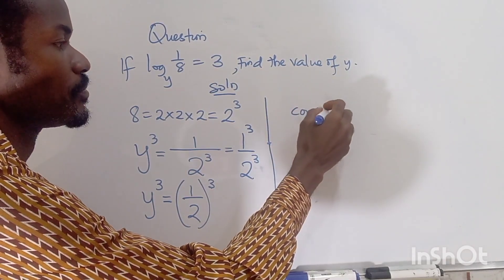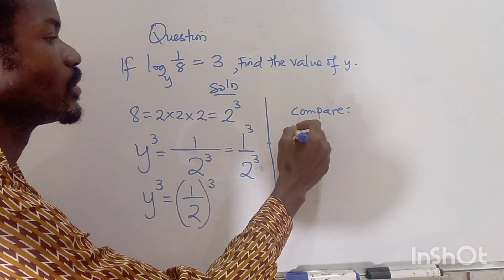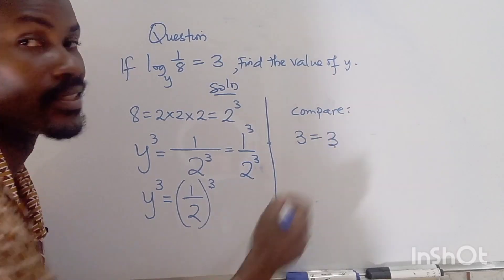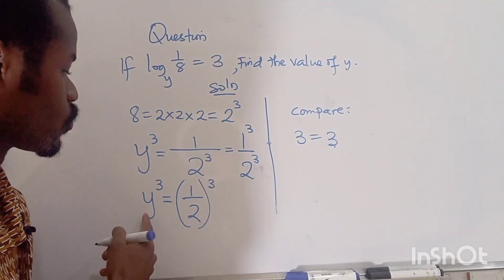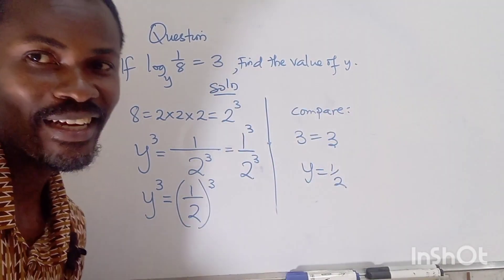Now if we compare this you can see that 3 is equal to 3, and y is equal to 1/2. So y is equal to one-half. The equation says we should find the value of y, so y is equal to one-half in this simple problem.